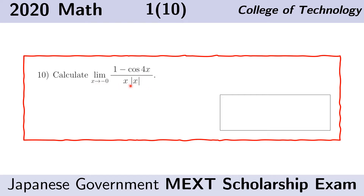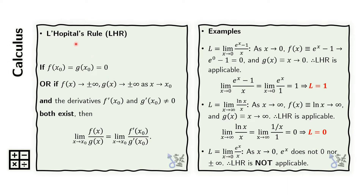We will have to remove the absolute value signs in order to manipulate this expression. L'Hôpital's rule is a theorem that helps us evaluate limits of this form. Here, f of x must be approaching 0 as x approaches x sub o. If those conditions are met, then we can apply L'Hôpital's rule.